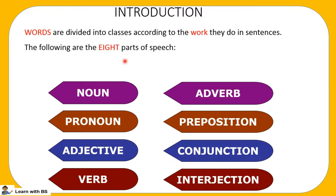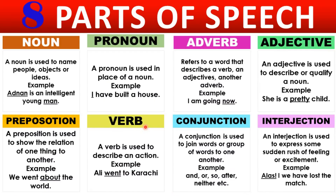Whenever you get a sentence, if you pick up one word, it will be either a noun, a pronoun, an adverb, a conjunction, a preposition — either of these eight. You will be given a sentence where some word will be underlined and you have to identify whether it is a noun, pronoun, adjective, conjunction, or interjection. So let's see one by one the definitions of all with the help of examples.